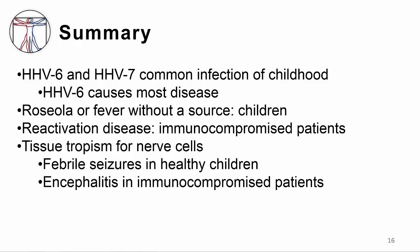In summary, HHV6 and HHV7 are common infections during childhood, but HHV6B causes most disease. The main clinical manifestations of infection in children are roseola or fever with no other symptoms. Reactivation occurs in immunocompromised patients and can be asymptomatic or cause a variety of diseases. The tissue tropism for nerve cells can, in part, explain why febrile seizures occur in children with primary HHV6 infection and why encephalitis occurs in immunocompromised patients.